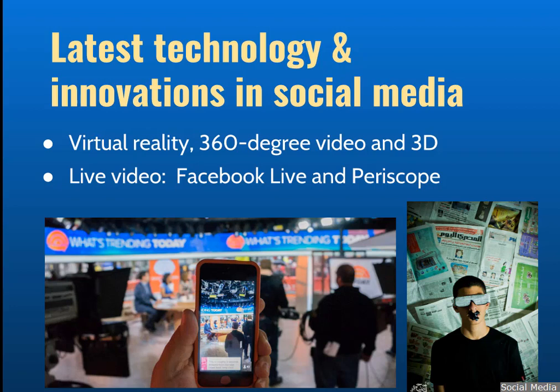If you're up on the latest technology and innovations in social media, you'll know that three that are becoming used a lot in the realm of communications, journalism, and public relations advertising are virtual reality, 360-degree video, as well as 3D video. These require special peripherals that you can use with your smartphone that gets less expensive every day. The other thing that is really new that I use a lot in my job is Facebook Live and Periscope. From a journalist's point of view, I can capture events, and from a public relations standpoint, I can do live videos of an event for people who can't be there. Live video has benefits for everyone in the media profession.